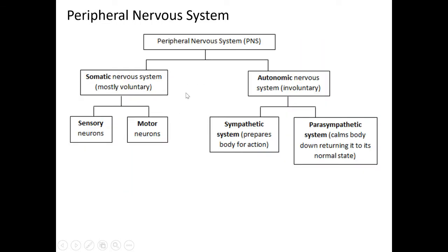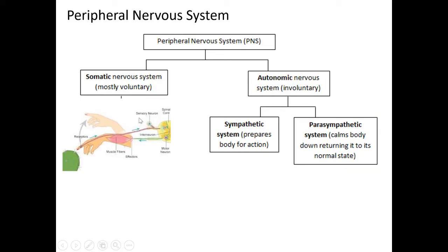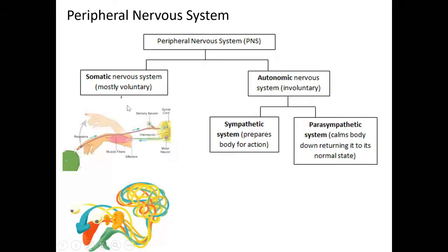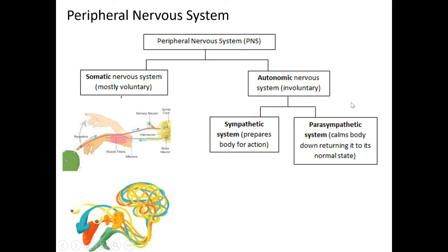The peripheral nervous system consists of the somatic nervous system, or SNS, and the autonomic nervous system, the ANS. The somatic nervous system has motor neurons and sensory neurons. The motor neurons take impulses from the central nervous system to the muscles and glands of the body. The sensory neurons take impulses from the sense organs to the CNS. The somatic is mainly voluntary, while the autonomic is mainly involuntary.